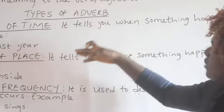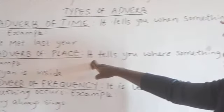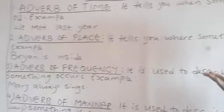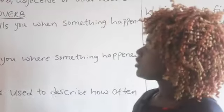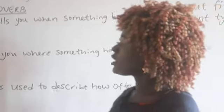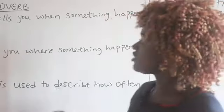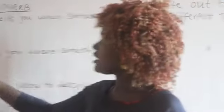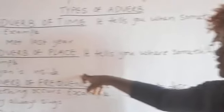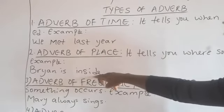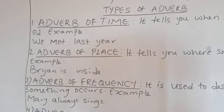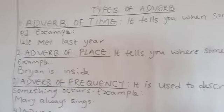We also have adverb of place. It tells you where something happened — it answers the question 'where.' For example, if I should ask: 'Where is Brian?' Brian is inside. It answers the question 'where.' This word 'inside' here is the adverb of place.